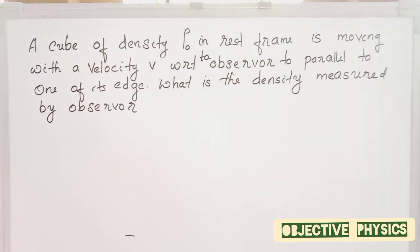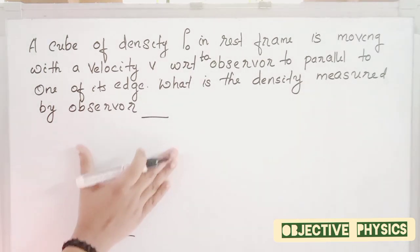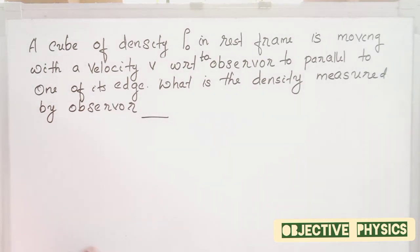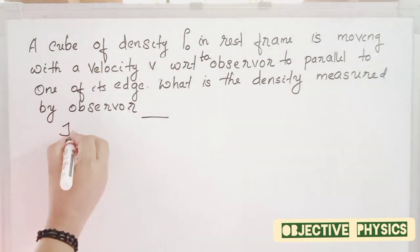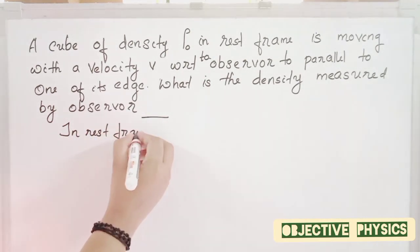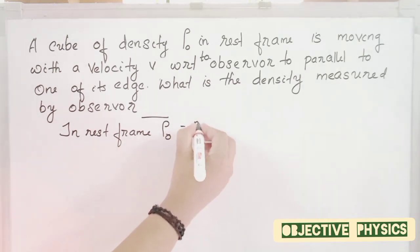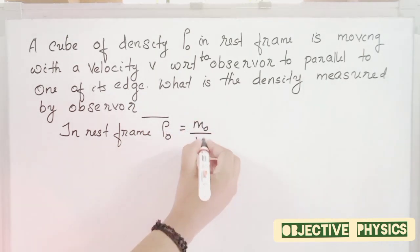A cube of density rho-zero in its rest frame is moving with a velocity v parallel to one of its edges with respect to an observer. What is the density measured by the observer? In the rest frame, density rho-zero is equal to M₀ divided by V₀.